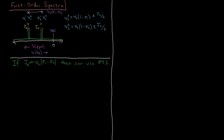We have the separation between the two peaks within a given proton that are coupled to each other. We have nu1 minus and nu1 plus, just to give them some distinct name. They're separated by J12 hertz.